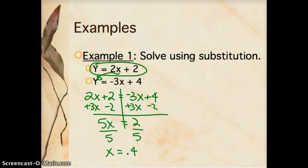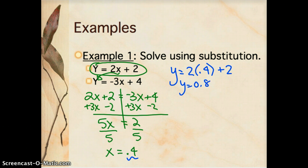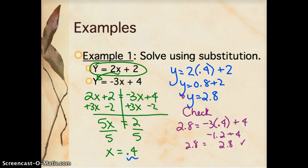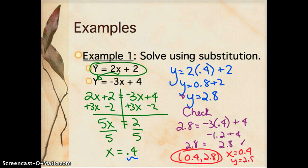Now I'll solve for y by plugging x equals 0.4 into the first equation: y equals 2 times 0.4 plus 2, so y equals 0.8 plus 2, meaning y equals 2.8. To check, I'll use the second equation: does 2.8 equal negative 3 times 0.4 plus 4? Negative 3 times 0.4 is negative 1.2, plus 4 equals 2.8 — that checks out. My solution is x equals 0.4, y equals 2.8, or the ordered pair (0.4, 2.8).